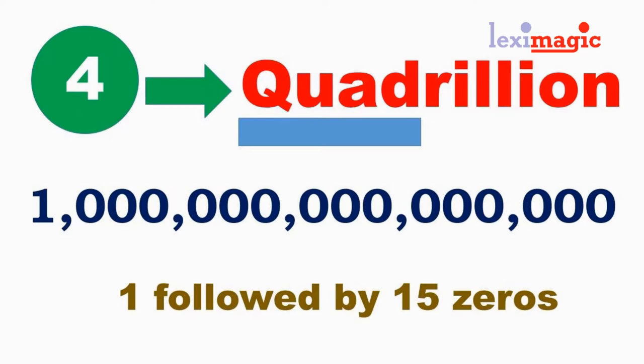As you can see, the numerical root of four appears here. So, how many zeros do we have? We have four times three, that is 12, plus three zeros.